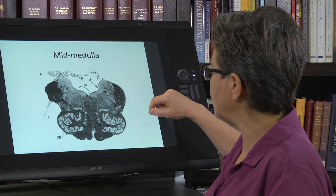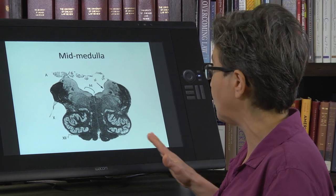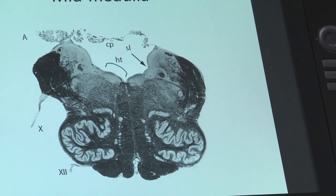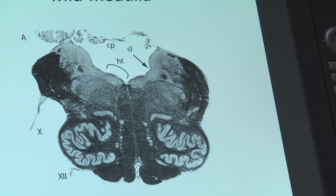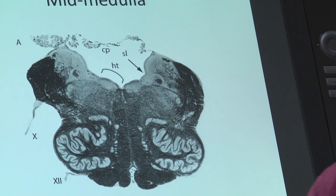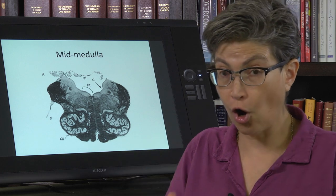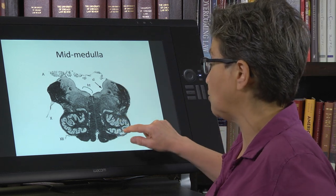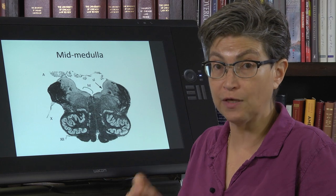We have a couple of other tracts to look at, even though they are not part of the cranial nerve nuclei or the three long pathways. This black area right here is growing — it was present before but very small and unremarkable. This is called the restiform body, and it forms the bulk of the inferior cerebellar peduncle. The restiform body contains virtually all of the spinocerebellar afferents, as well as input to the cerebellum from the inferior olives, all traveling through it to form the inferior cerebellar peduncle.